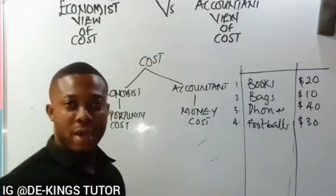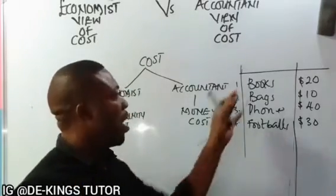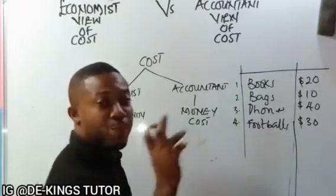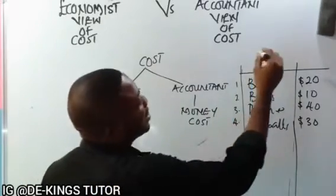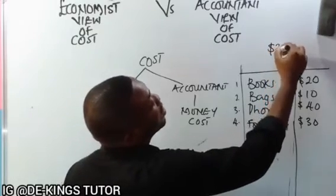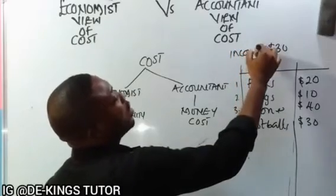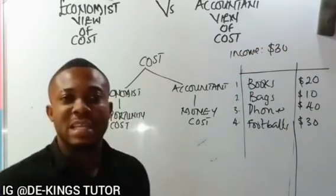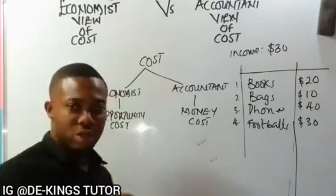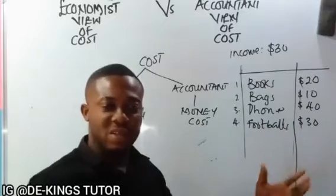The phone costs $40 and the football costs $30. And if that individual's disposable income is $30 — the income of that individual is $30 — what is the opportunity cost and what is the money cost, given this scale of preference?